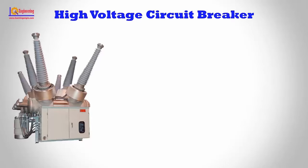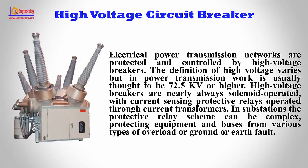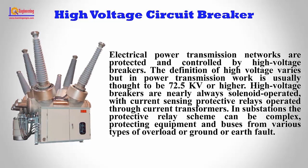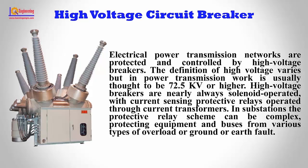High Voltage Circuit Breakers protect and control electrical power transmission networks. The definition of high voltage in power transmission work is usually considered to be 72.5 KV or higher. High voltage breakers are nearly always solenoid operated with current sensing protective relays operated through current transformers. In substations, the protective relay scheme can be complex, protecting equipment and buses from various types of overload or ground/earth fault.